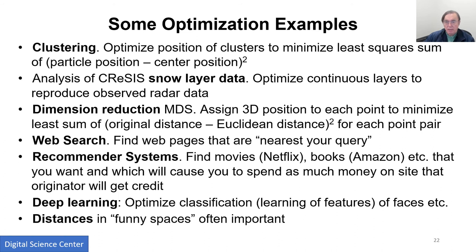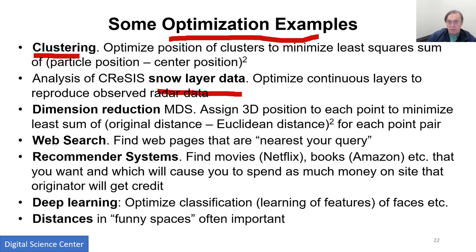Now we come back to optimization. We have various methods and various problems. One we do is looking at radar data to try to look at snow. If you look at snow, you see layers because you have a season's worth of snow — it freezes, there's a hard top to the snow, the next snow falls on top of it, and so you get a whole set of layers, one layer per year. You need to analyze how much snow falls in each year, so you have to identify the layers from the radar reflections.